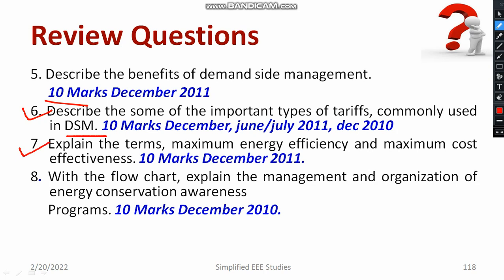Explain the terms maximum energy efficiency and maximum cost effectiveness — give the definition of what each means. Then, with a flow chart, explain the management and organization of energy conservation awareness. You can use the 3-block diagram or 3-step flow chart which I already explained. It carries a weightage of 10 marks, and that flow chart is mandatory — give a suitable explanation.